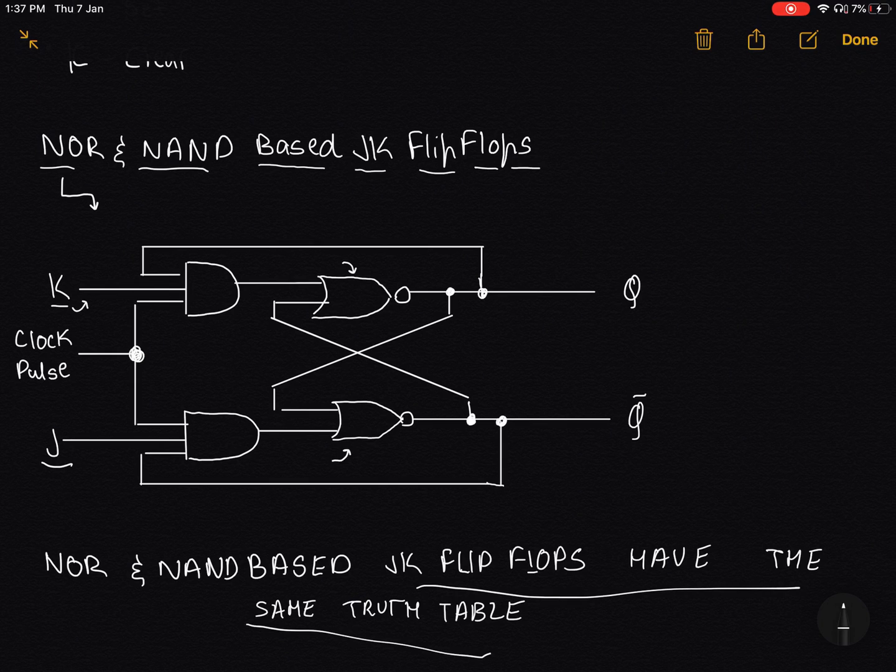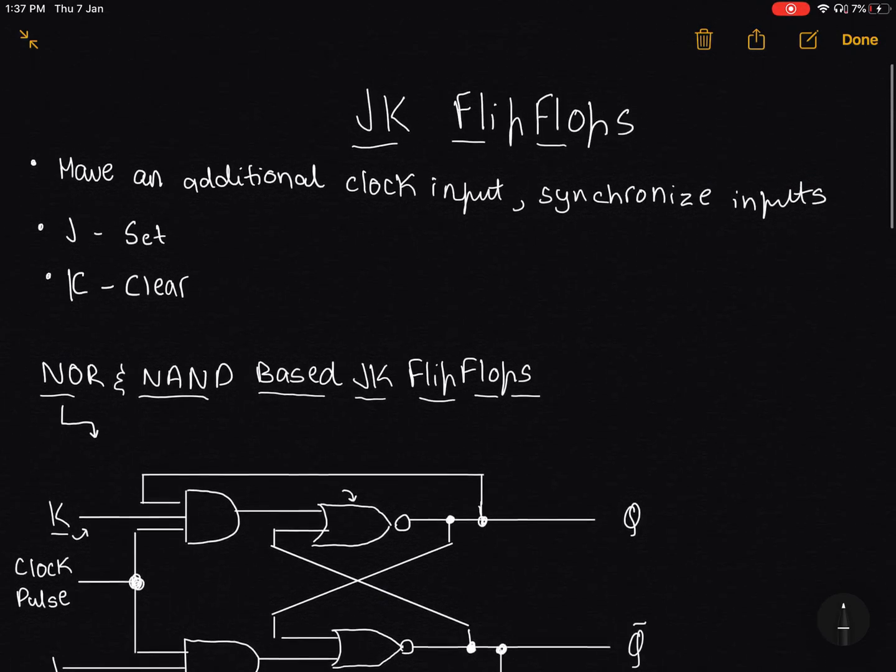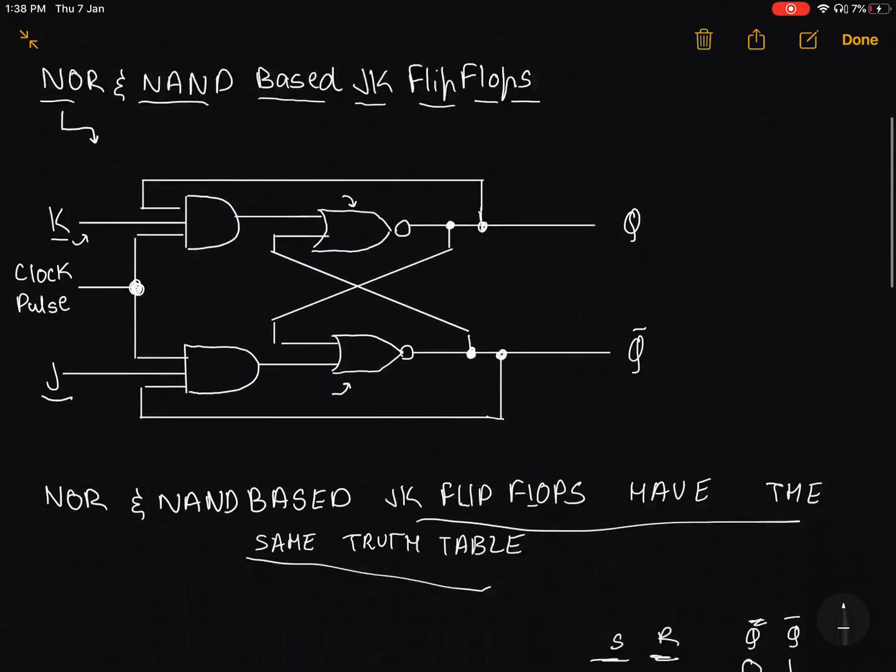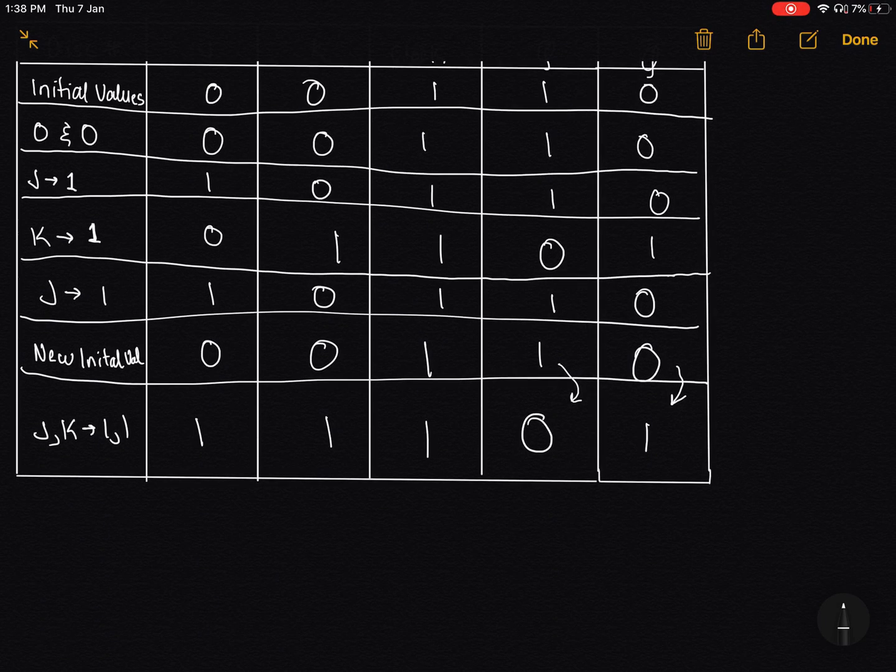Just go through the truth table, do it for yourself once, take some values. If you want, you could solve the logic gate itself, but it'll be pretty lengthy and I really don't recommend you to do that because you will tend to make a lot of mistakes. I will actually be putting the notes down for SR and JK flip flops in the description. If you want, make sure to go through that.